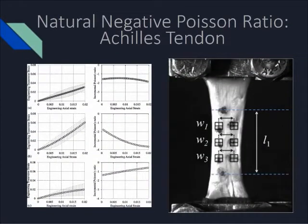While this auxetic behavior may seem quite exotic, negative Poisson ratio has actually been observed in nature. In a study by Gatt et al., human and pig Achilles tendons were found to have negative Poisson ratios within their normal range of motion.